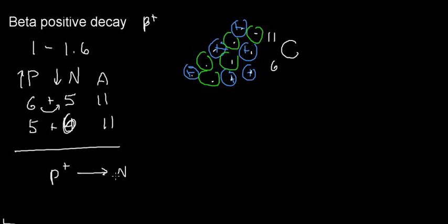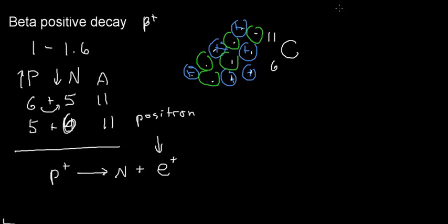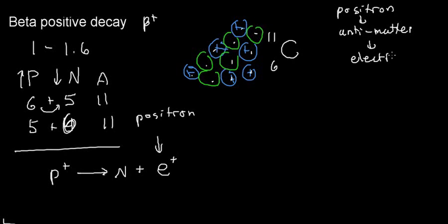It just so happens that I lose it in the form of a positron. A positron is kind of important — it is the antimatter of an electron, in the sense that a positron has a positive charge while an electron has a negative charge.